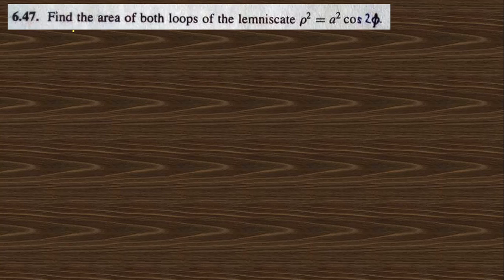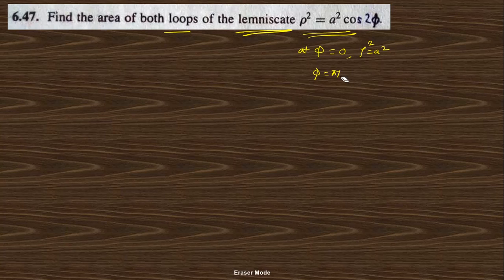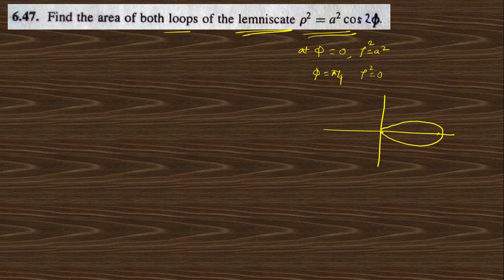Next, question 6.47: find the area of both loops of the lemniscate, whose equation is ρ² = a² cos(2φ). At φ = 0, cos(0) = 1, so ρ² = a². At φ = π/4, cos(π/2) = 0, so ρ = 0. The curve of this equation is symmetric about the x-axis and y-axis. The limit will be from −π/4 to +π/4, multiplied by 2 to get the total area.